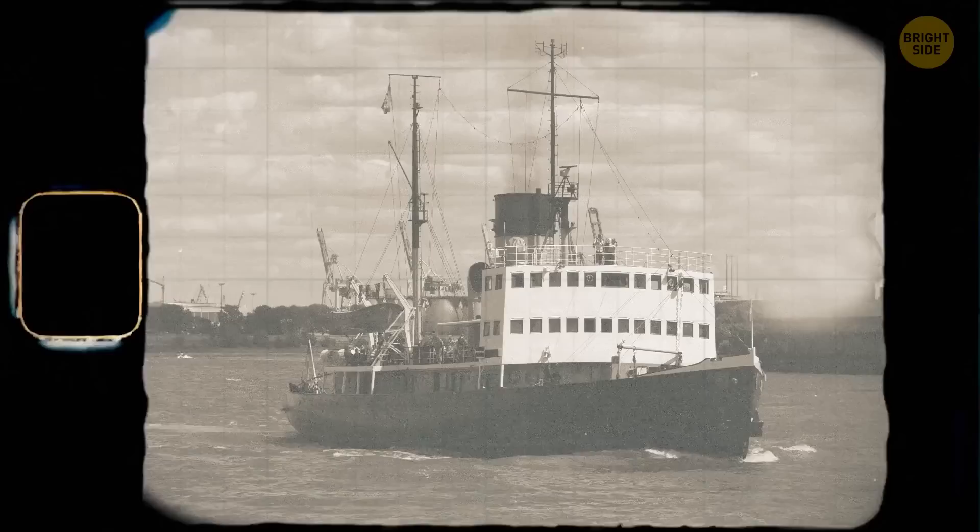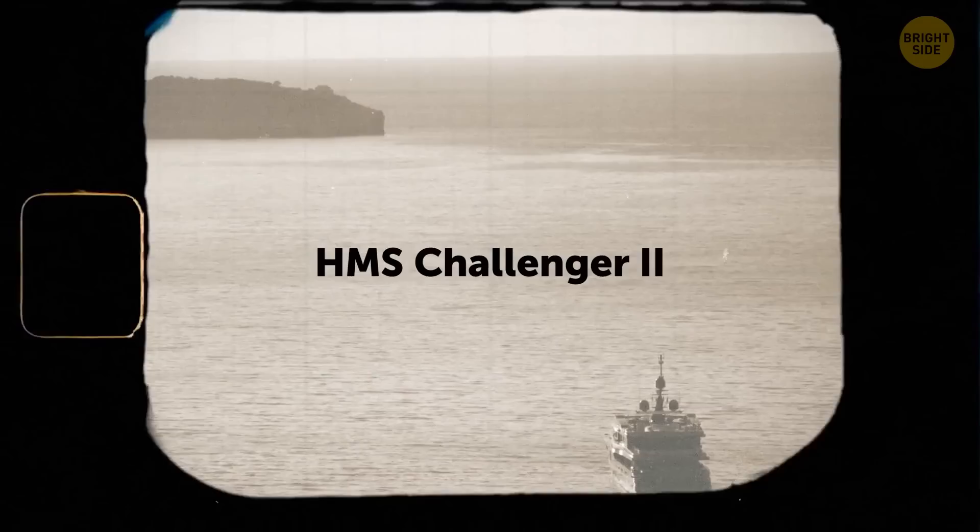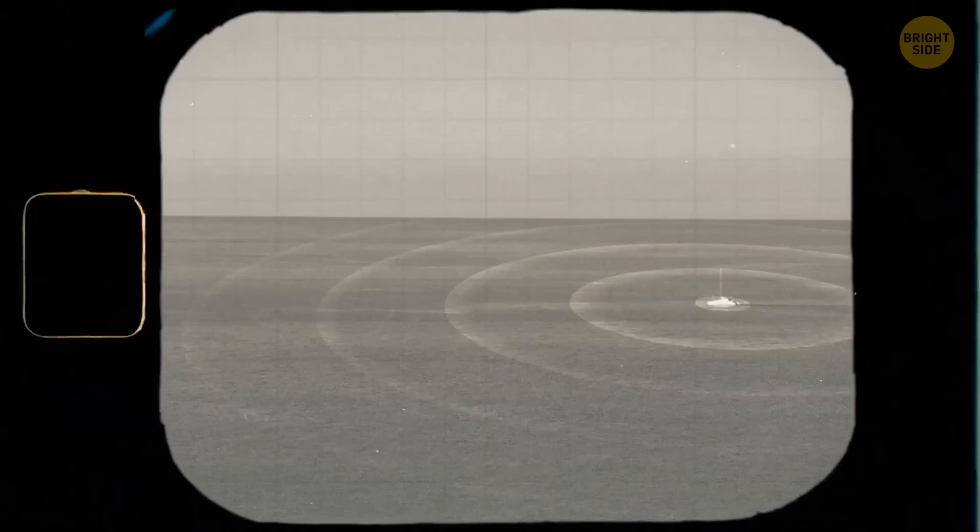Some decades later, in 1951, another ship, the HMS Challenger II, came back to the location better equipped. The vessel featured an echo sounder and was able to take accurate measurements of what seemed to be the deepest point on the surface of our planet.